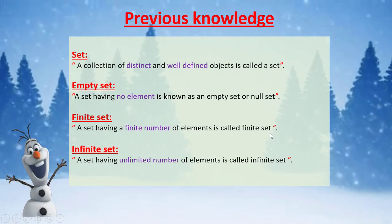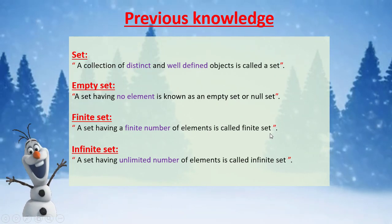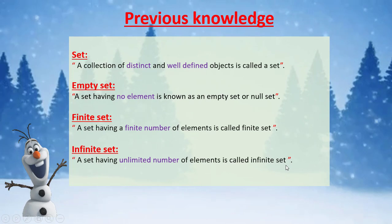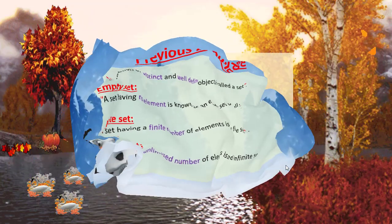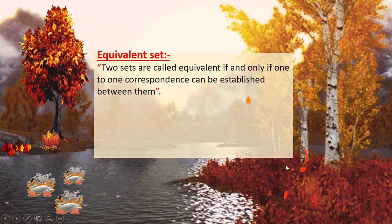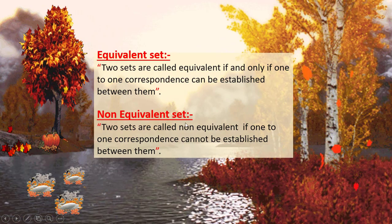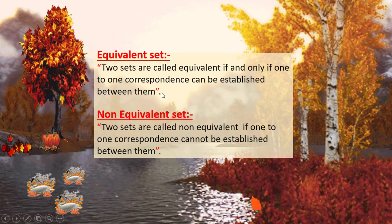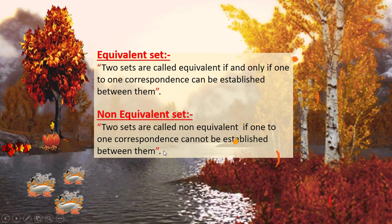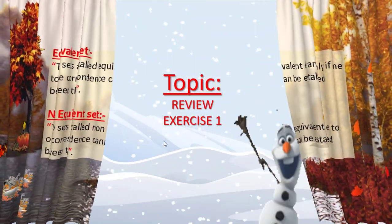Finite set: a set having a finite number of elements is called a finite set. Infinite set: a set having an unlimited number of elements is called an infinite set. Equivalent set: two sets are called equivalent if and only if a one-to-one correspondence can be established between them. Non-equivalent set: two sets are called non-equivalent if a one-to-one correspondence cannot be established between them.